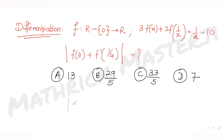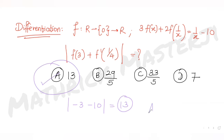Putting it together: |f(3) + f'(1/4)| = |-3 + (-10)| = |-13| = 13, which matches option A. So option A is the correct answer.